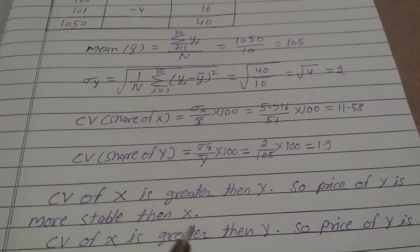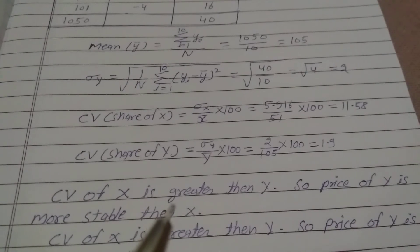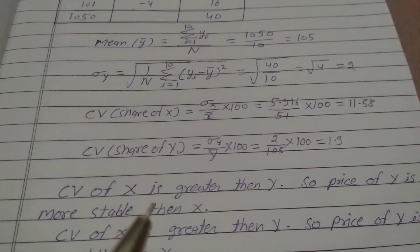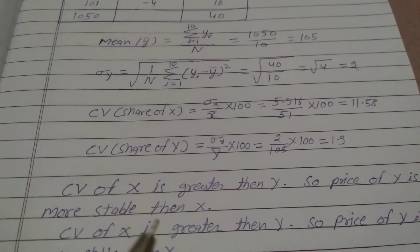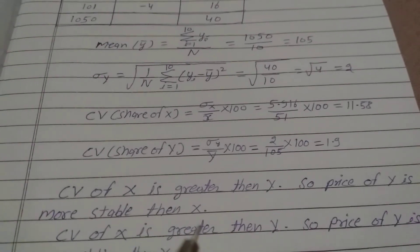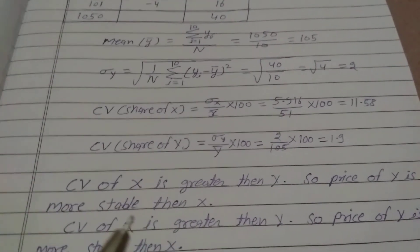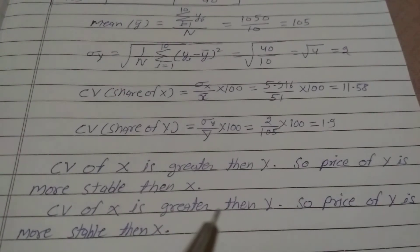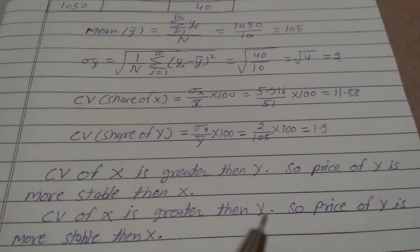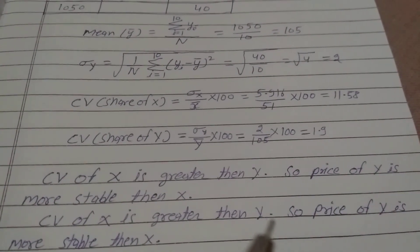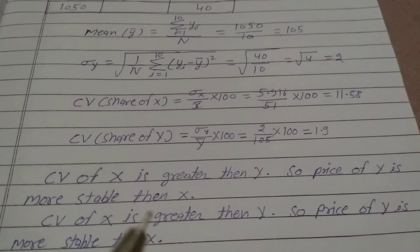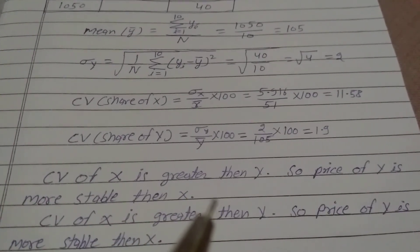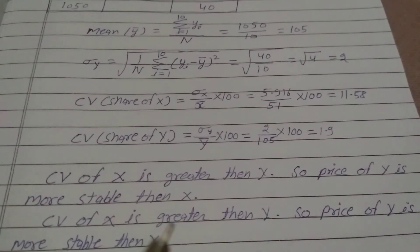Since CV of X is greater than CV of Y, the price of Y is more stable than X. If CV is less, the share is more stable. Therefore, price of Y is more stable than X. That is the answer.